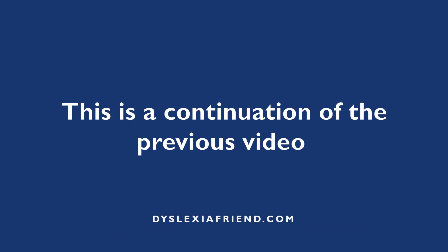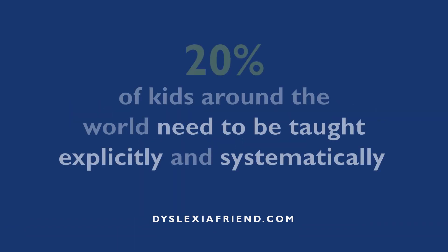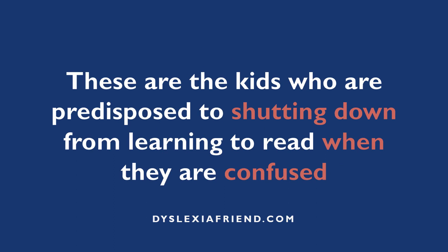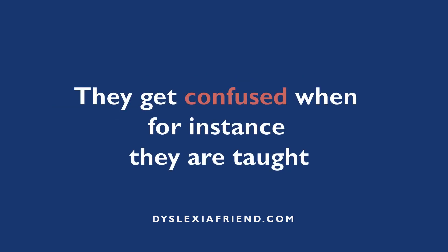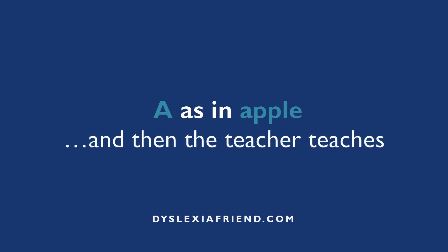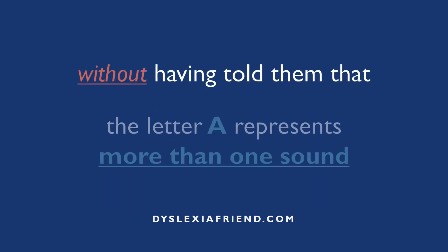This is a continuation of the previous video. About 20% of kids around the world need to be taught explicitly and systematically. These are the kids who are predisposed to shutting down from learning to read when they are confused. They get confused when, for instance, they are taught A as in Apple and then the teacher teaches A as in Ace without having told them that the letter A represents more than one sound.